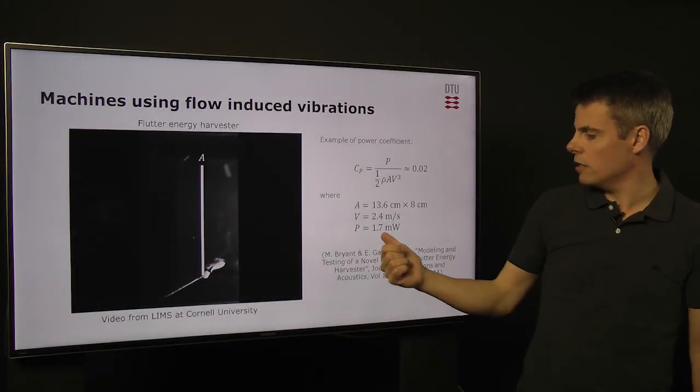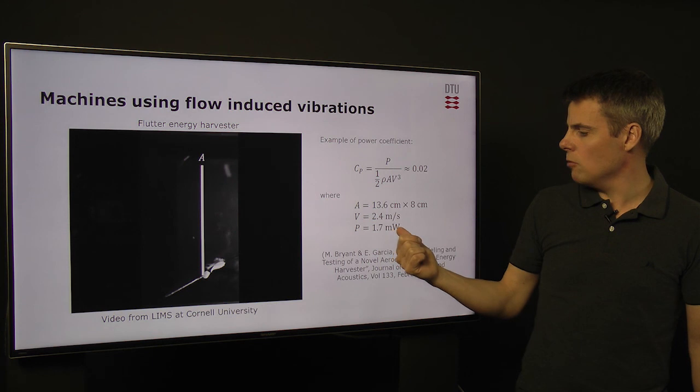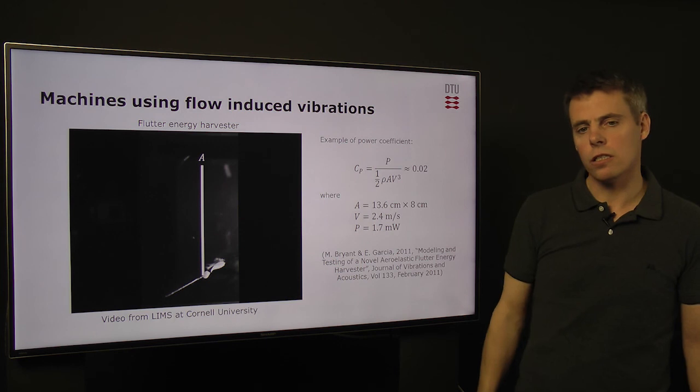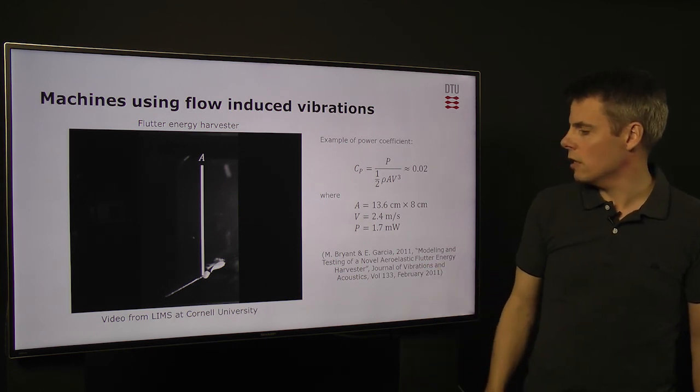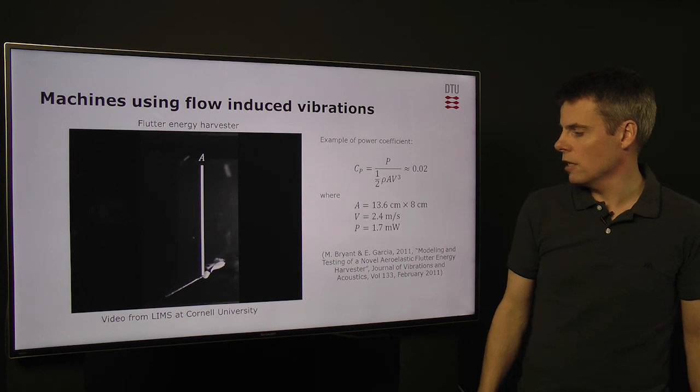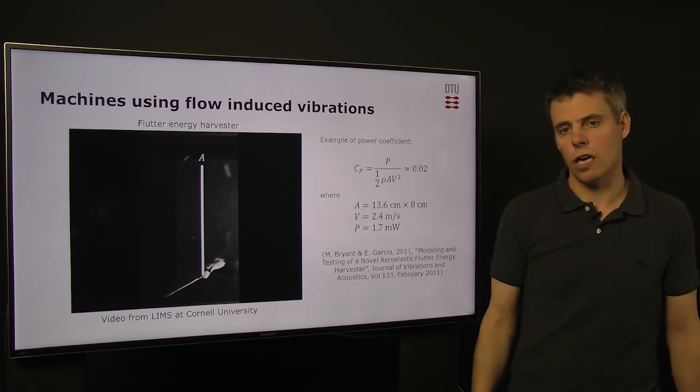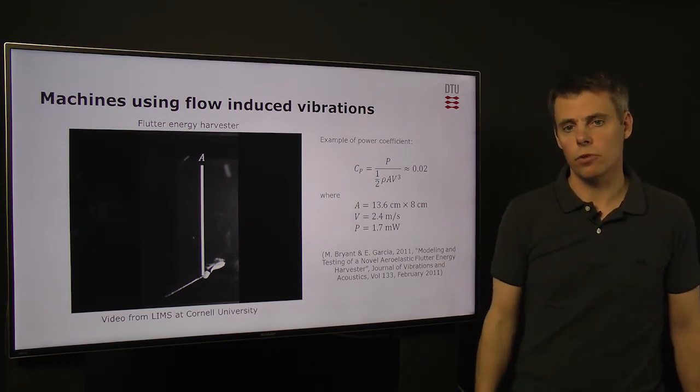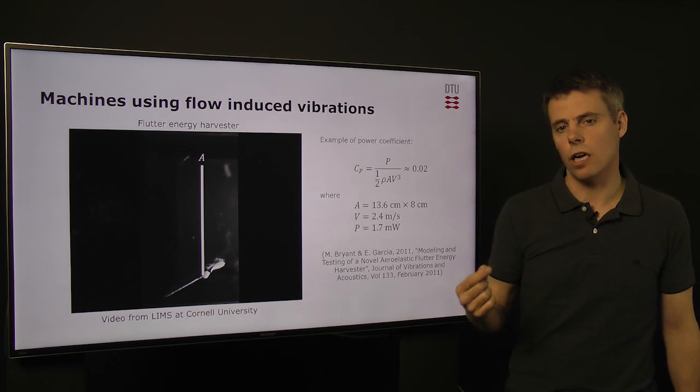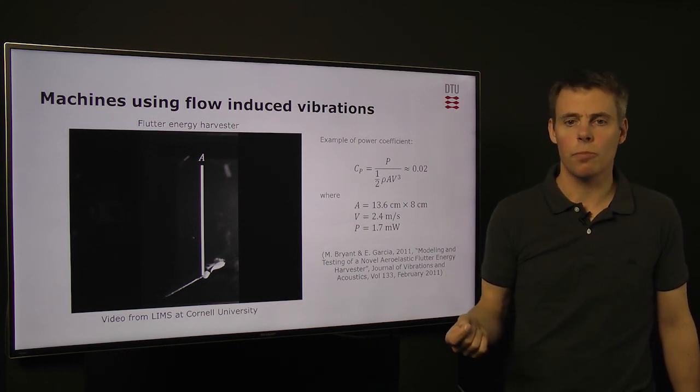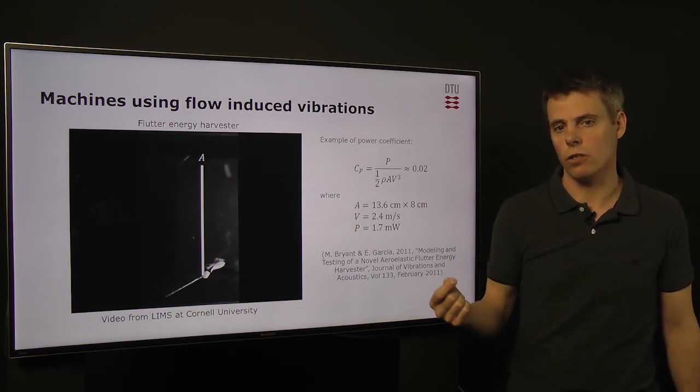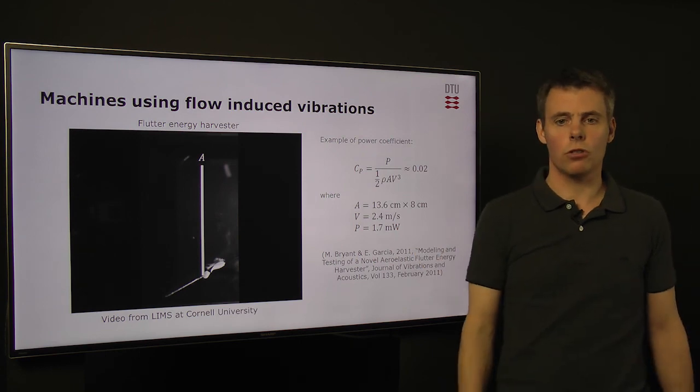If I take this example from Cornell University and the paper shown here, they have shown that they can generate a couple of milliwatts with a vibration of 8 centimeters and a spanwise airfoil that is about 13.6 centimeters. It has the benefit of being able to start this particular one at very low wind speeds and if I calculate the power coefficient for this example in this paper, I get a quite low power coefficient. But it has the benefit of being able to start at low wind speed, it has very few moving parts and it can therefore be used for example to power remote sensing and other devices. But it is still in milliwatts, we are not talking megawatts.